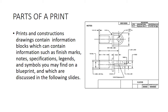Blueprints and construction drawings contain information blocks which can contain information such as finish marks, notes, specifications, legends, and symbols you may find on a blueprint, which we're going to discuss in the following slides. You need to understand the different parts of a blueprint — revision blocks, title blocks, all the different information on there. We're going to cover all that before we get into the lines and the alphabet of lines.